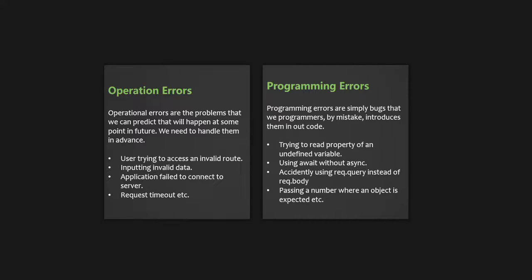Then we have programming errors — these are simply bugs that we programmers by mistake introduce in our code. For example, trying to read properties from an undefined variable, or using await without async, or accidentally using request.query instead of request.body, or passing a number where an object is expected. These errors are really inevitable and also more difficult to find and to handle.